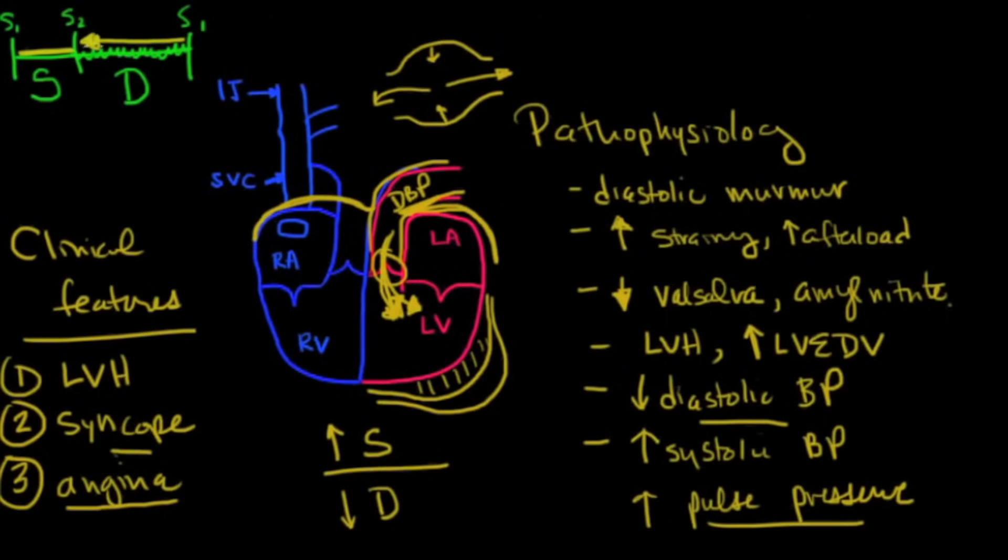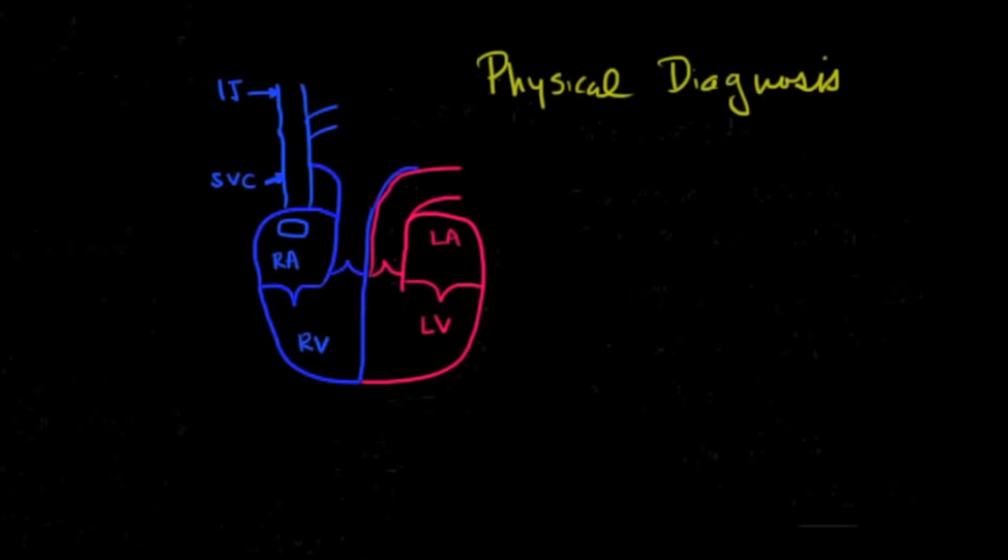It gets shorter and shorter to allow for a faster heart rate. The point is that as the heart rate speeds up, diastole becomes shorter and shorter. And therefore, the time for regurgitation becomes less and less. So as a result of this, you usually see that tachycardia is well-tolerated. So tachycardia is well-tolerated in aortic insufficiency.